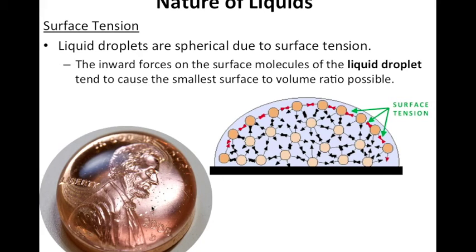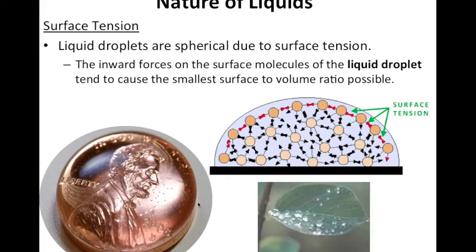but because it has a net force going to the center, it will pull that water back in and create almost like a dome on top of the penny. Another example is on a leaf, you can actually see the sphere start to form. They don't flatten out, they stay as a sphere because of that surface tension.